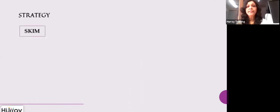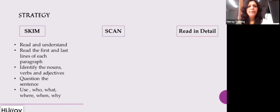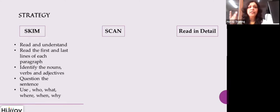Let's look at some strategies. You have to do skimming — skimming means speed reading or fast reading. Then you have scanning — to look for specific details and minor pieces of information. Then read in detail. For skimming, you read quickly and understand what the context is all about. Read the first and last lines of the paragraphs and identify the nouns, verbs, and adjectives — the naming words, action words, and descriptive words.